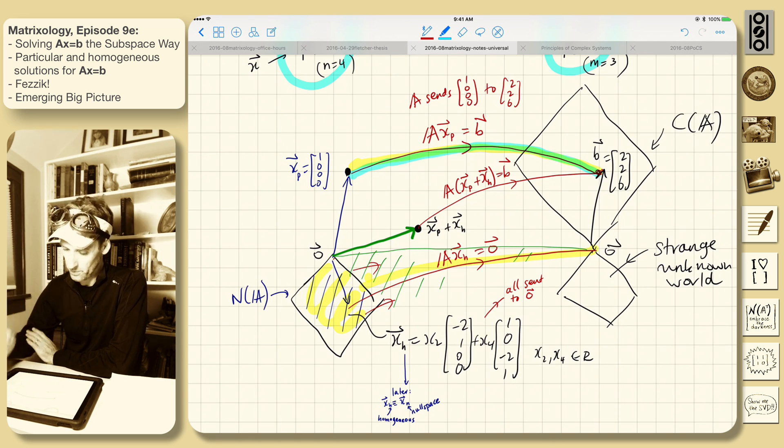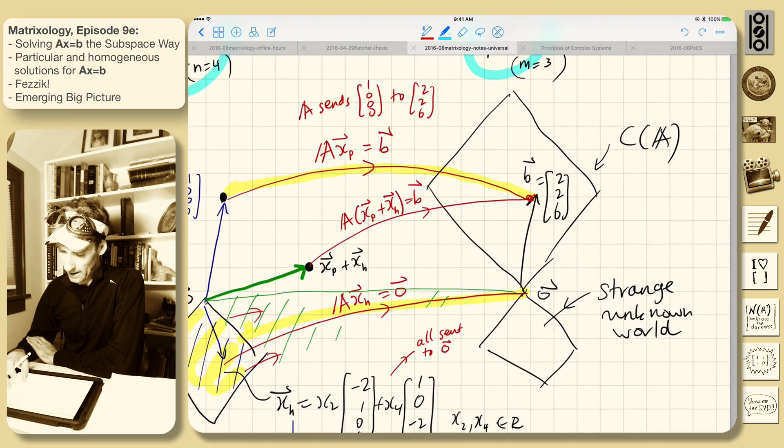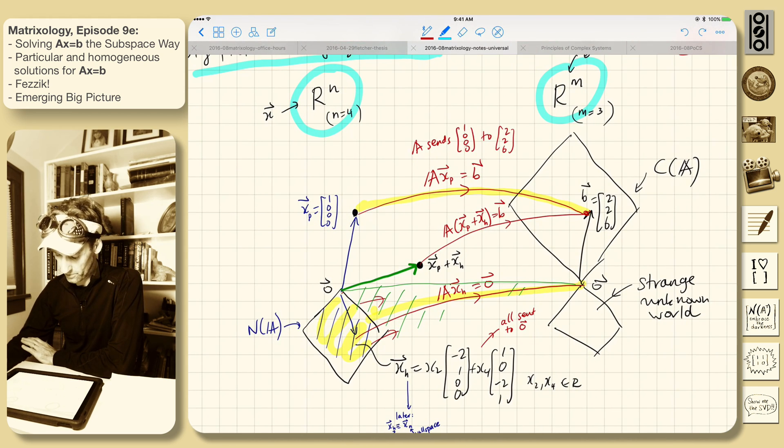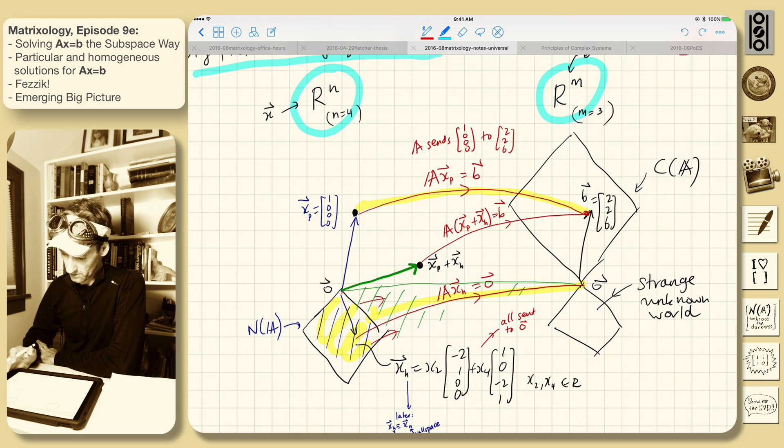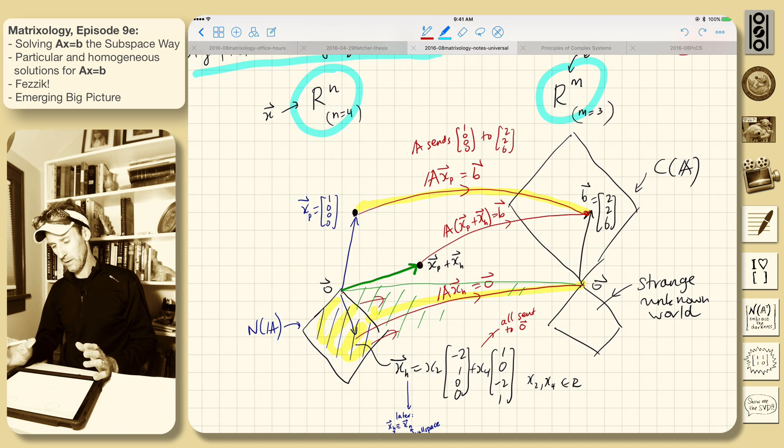And then where's B? B lives over here in what's column space. And this is over in m dimensions, which is three dimensions for this example. There's an unknown world over here. These are things we cannot make with this matrix. There's a whole, for physics, there's a one-dimensional subspace in three dimensions we cannot make. It's going to be called left null space. We will get to it. But really at the moment, this gives you a pretty good sense of the architecture of Ax = B. B has to live in the column space of A if there's a solution.